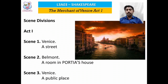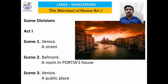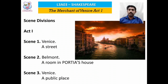Now we move on to the scene divisions in the play. Act 1 has only three scenes. Scene 1 takes place in Venice, in a street. Scene 2 shifts to Belmont, that is Portia's house. And Scene 3 shifts back to Venice, in a public place. We can have an in-depth analysis of all three scenes now.